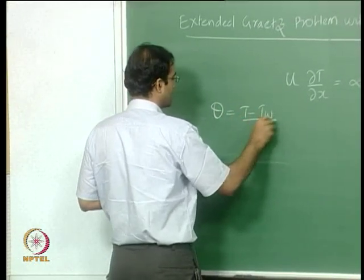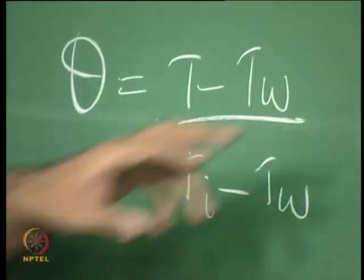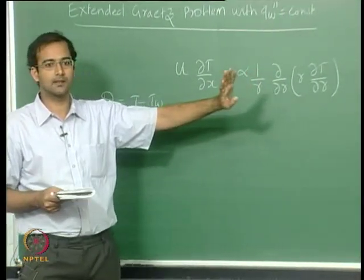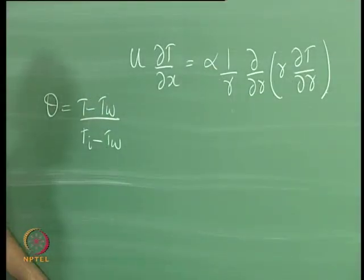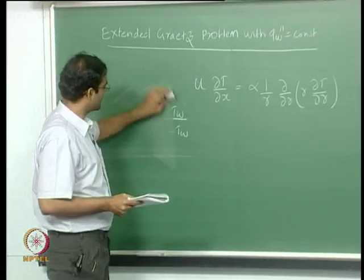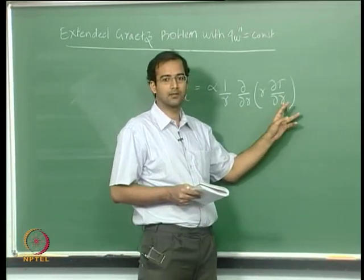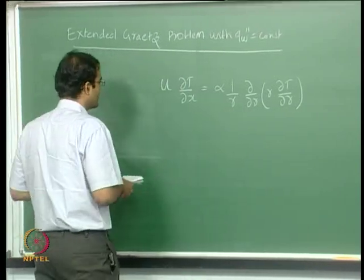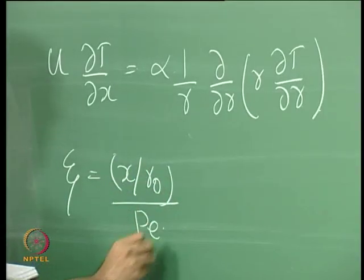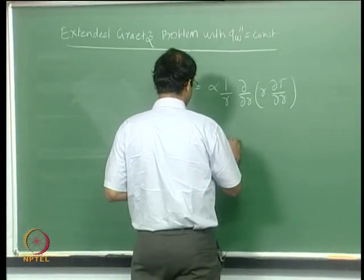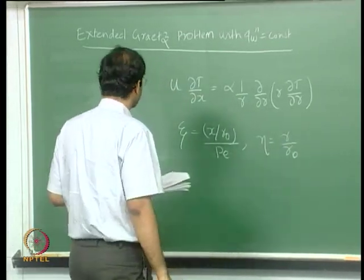Any attempt to define a non-dimensional temperature like θ = (T − T_wall)/(T_i − T_wall) would be futile here, because that form was useful only when wall temperature was constant. With constant wall flux, the wall temperature is a function of x, so we cannot define non-dimensional temperature that way. Instead, we keep temperature in dimensional form and non-dimensionalize only the coordinates x and R, defining ζ = (x/R₀) / Pe and η = R/R₀.